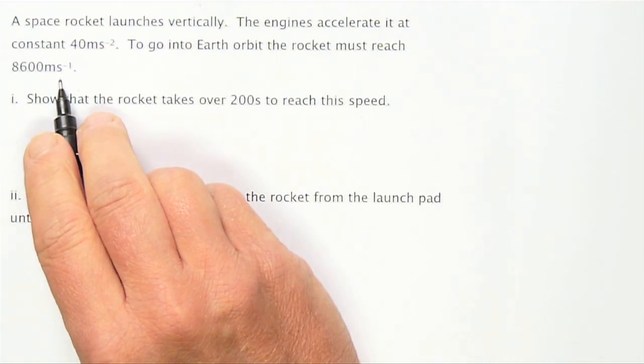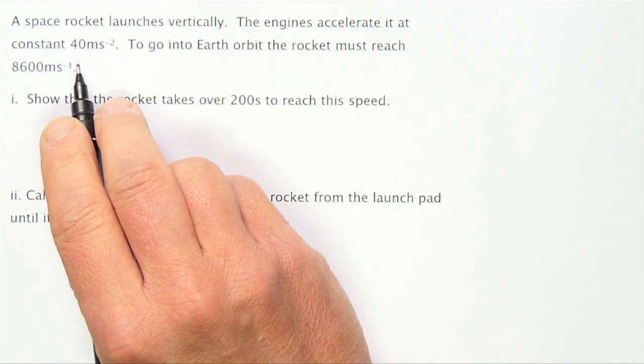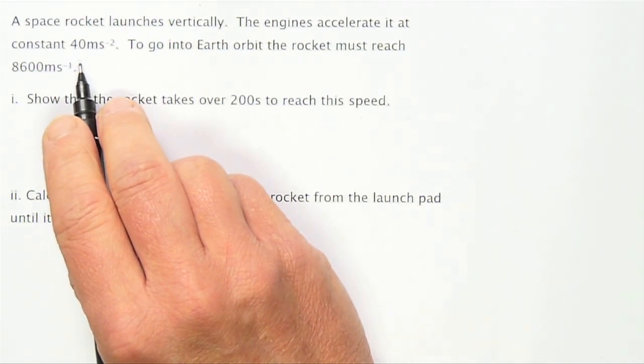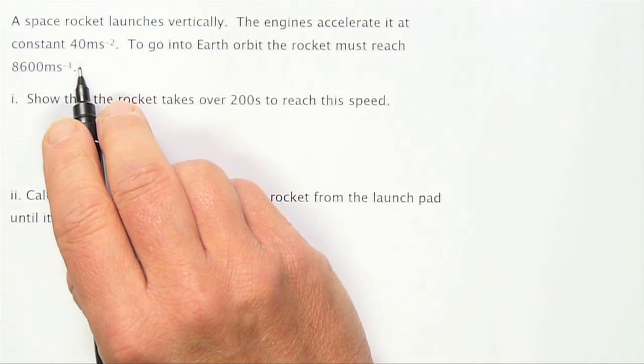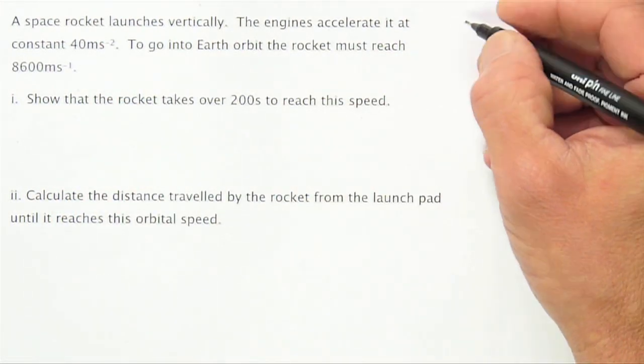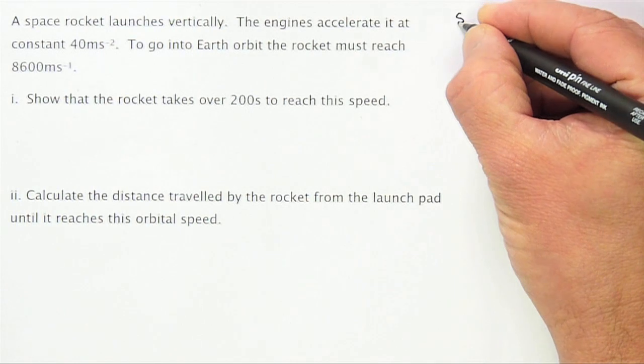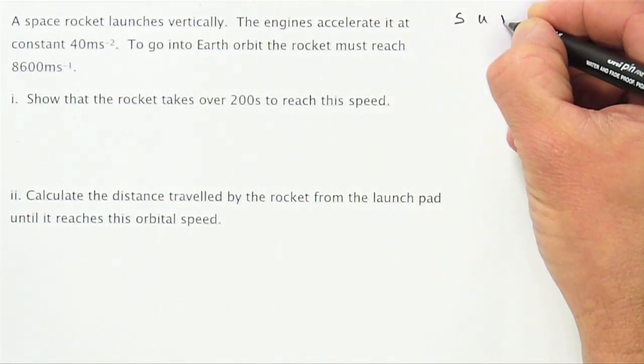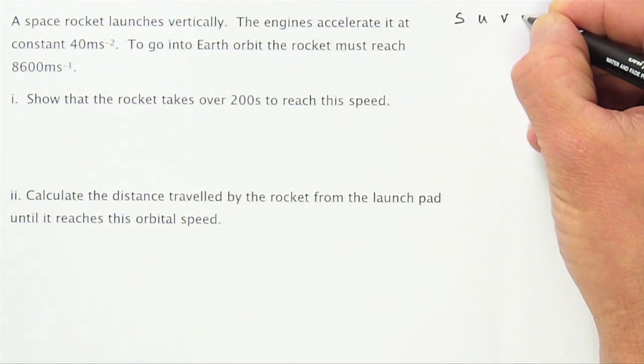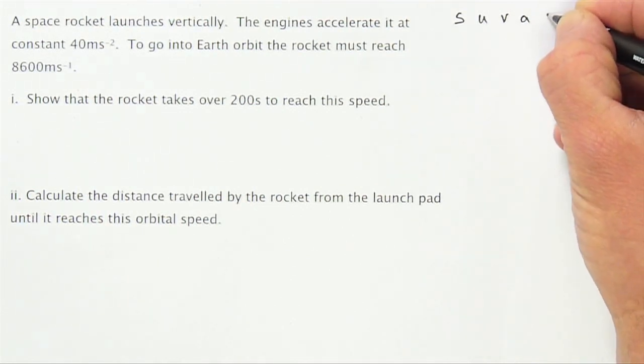What we have here is a constant acceleration question so we will use the equations of motion for constant acceleration. Some people know these as the SUVAT equation. S for distance, U for initial velocity, V for final velocity, A for acceleration and T for time.